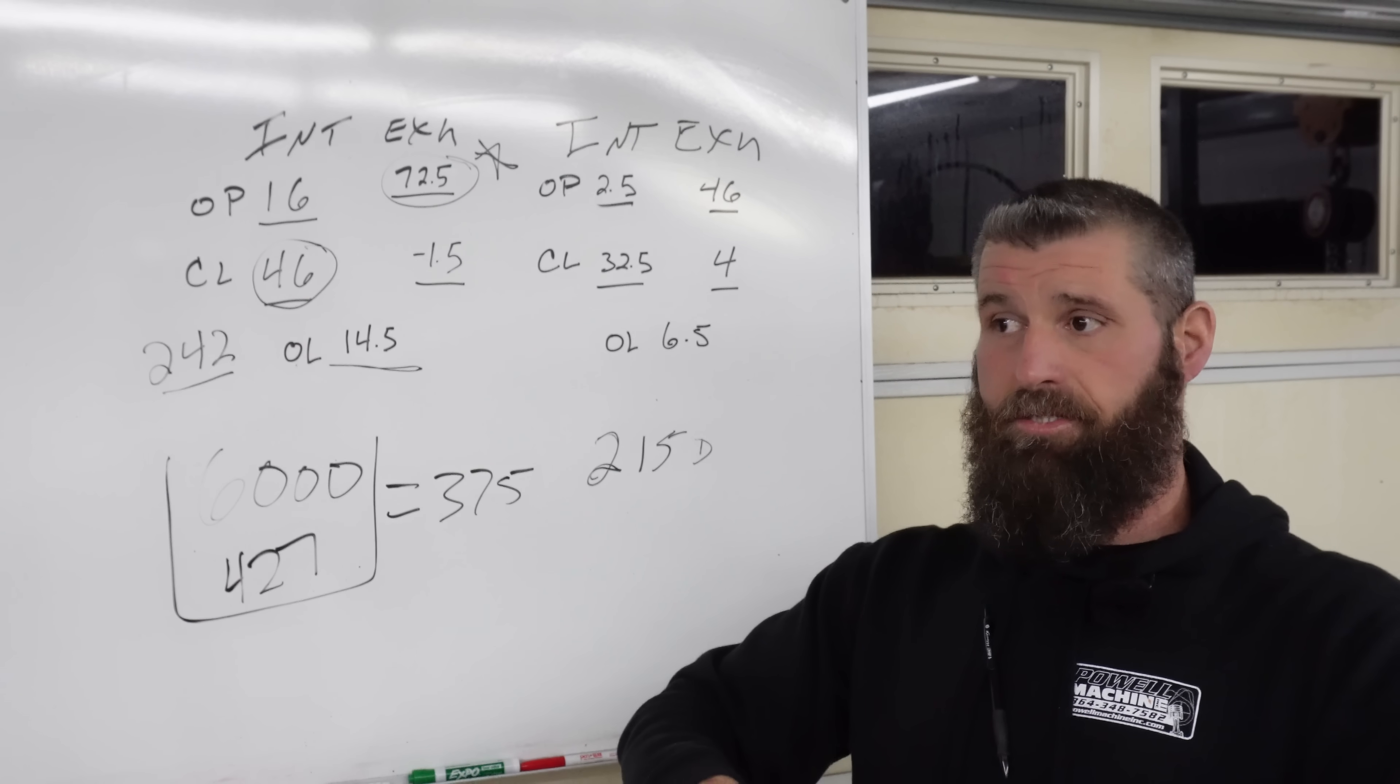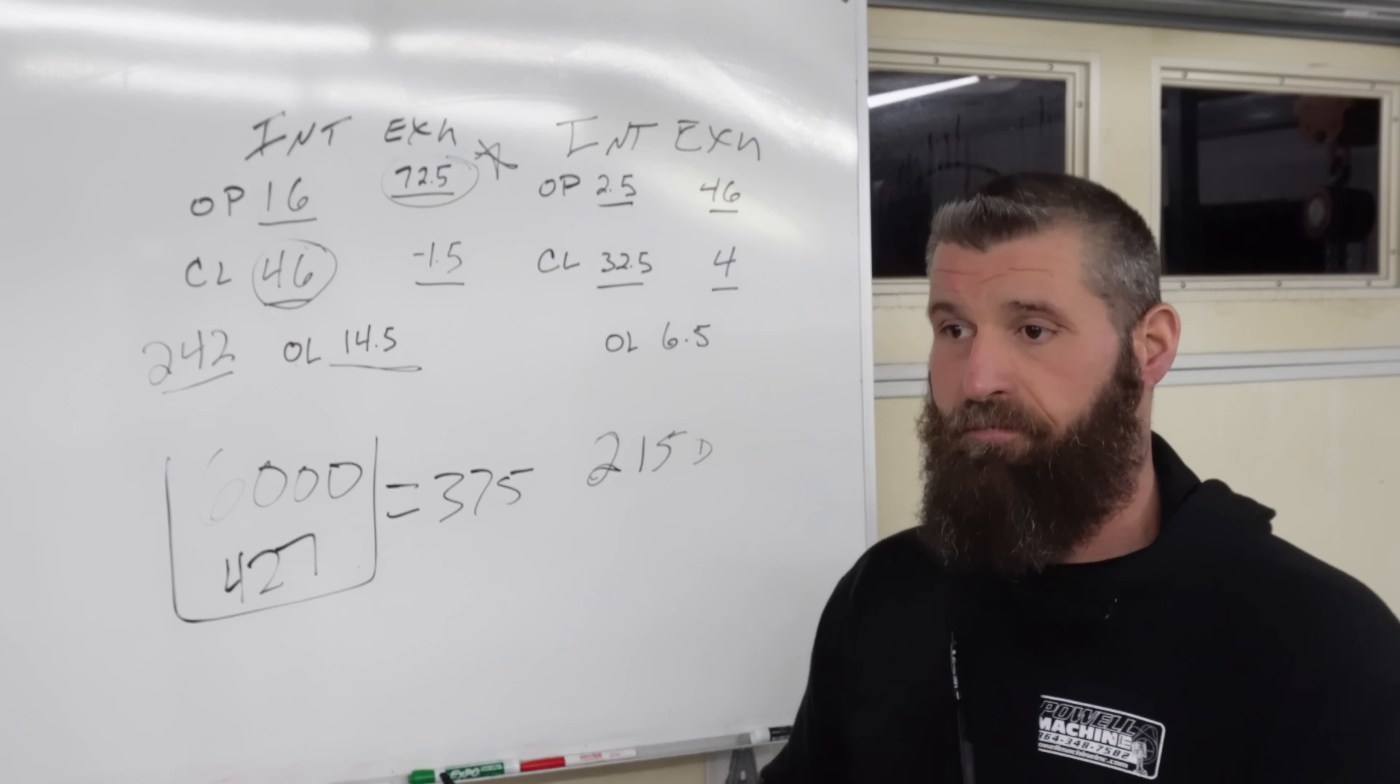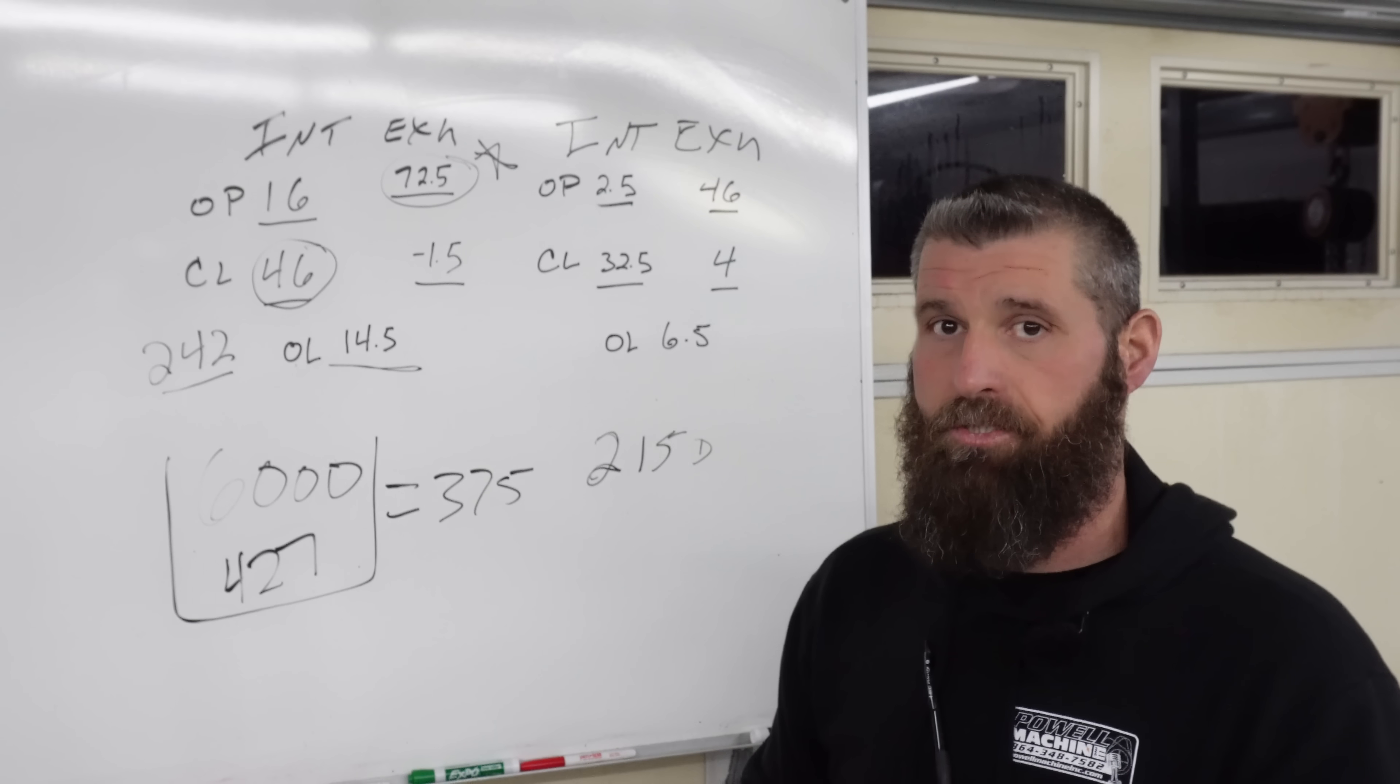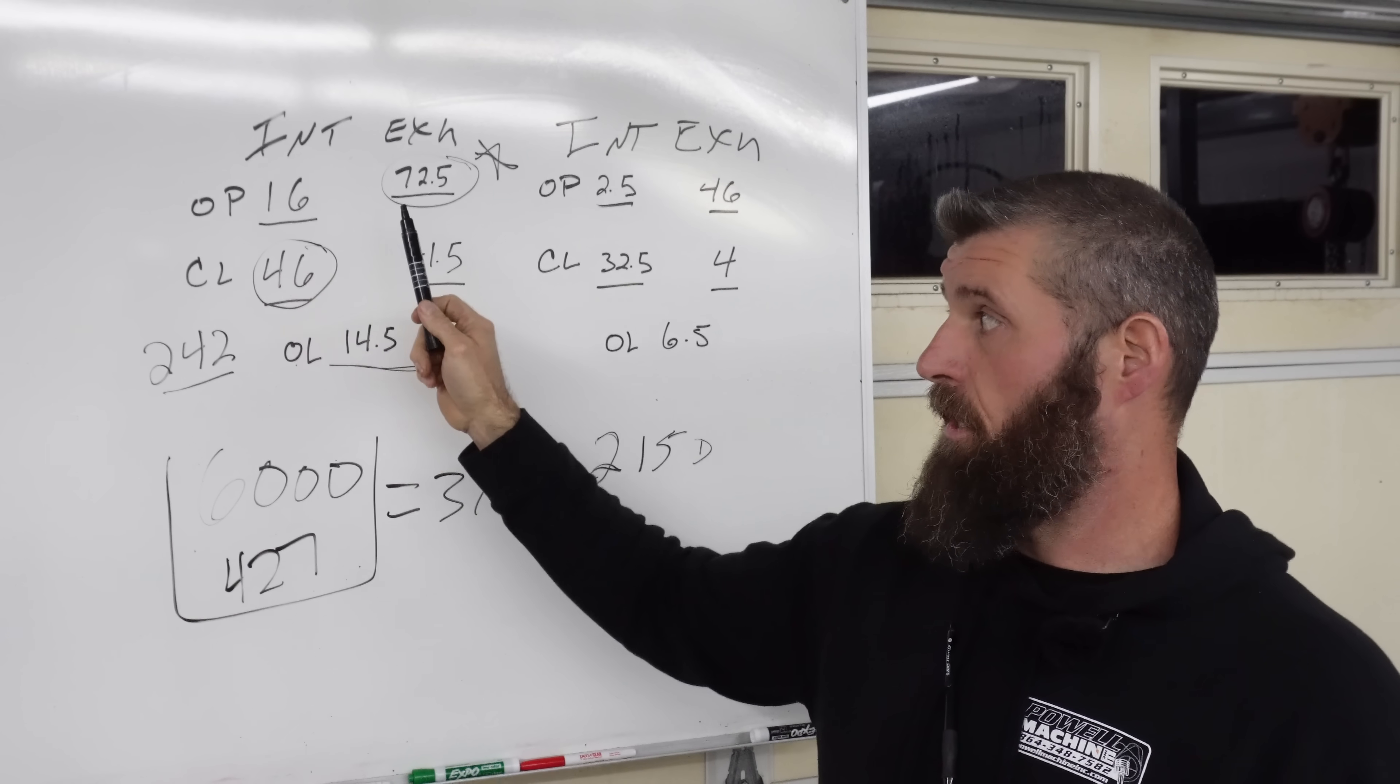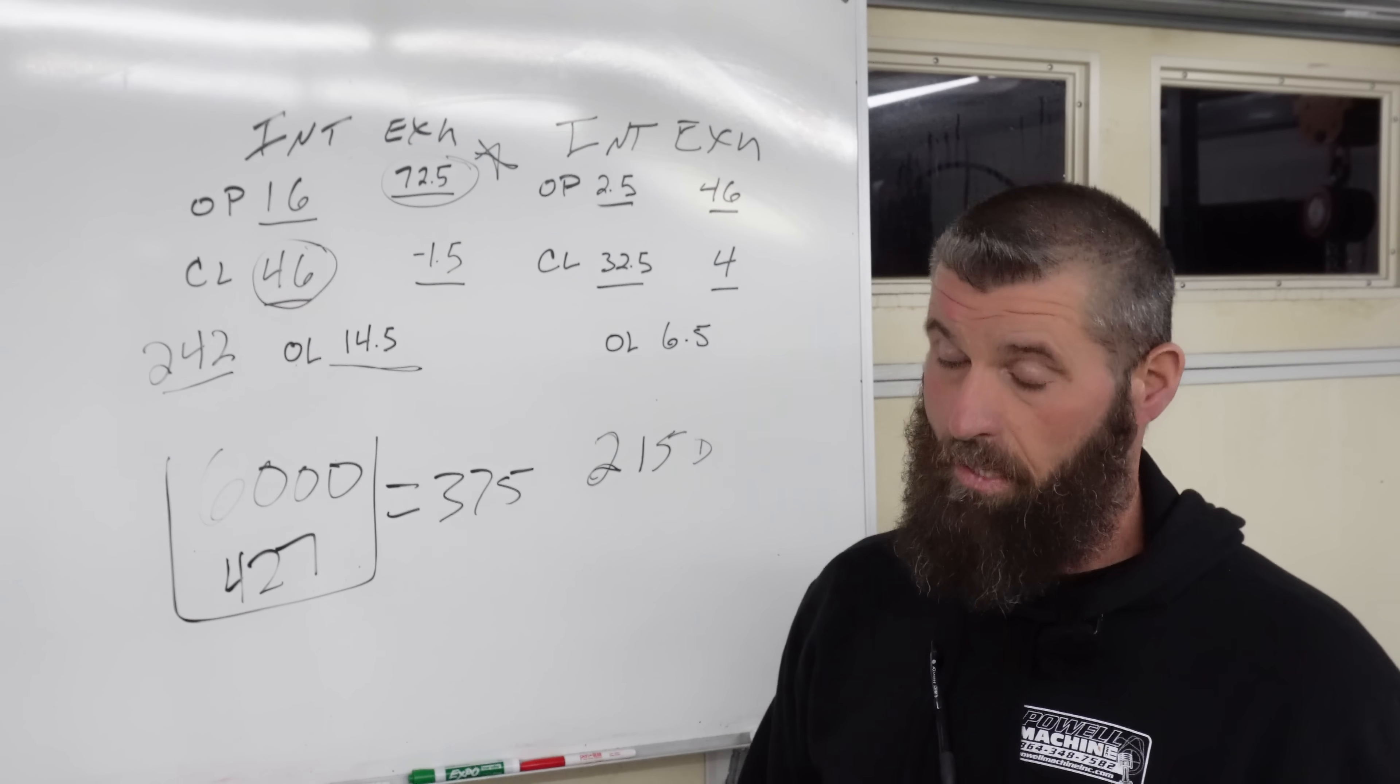And on top of that, it's got this just massively wide LSA, which is the dumbest thing on the planet for a low RPM, low compression engine. I mean, if you want to do low RPM and low compression, then you need to trap as much cylinder pressure as humanly possible. And this number does that, and this number keeps it in. So if you got this one way late and this one way early, I just don't even know how they math that up.